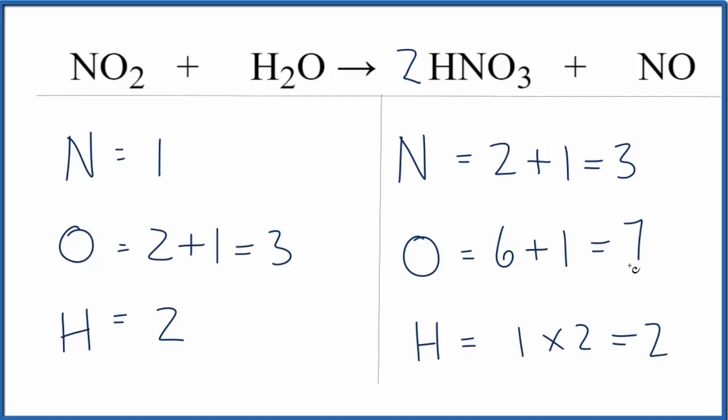Why don't we balance the nitrogens next and see what happens to the oxygen? So I need three nitrogens. I'll put a coefficient of three. So I have one times three. That'll give me three nitrogens.